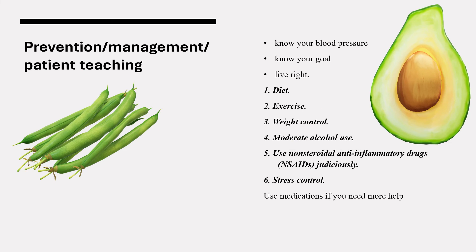In the management of hypertension, the first step is to know your blood pressure, the next is to know your goal, and third, live right. Lifestyle modifications can lower your blood pressure and are an essential part of prevention and treatment of high blood pressure. Here are five steps that can help. First, diet: reduce your sodium intake to less than 2300 milligrams a day, though 1500 milligrams is the new recommendation. Reduce your intake of animal fat and processed foods, but eat plenty of fruits and vegetables, whole grains, and fish. A good diet can lower systolic blood pressure by 10 to 22 millimeters of mercury.